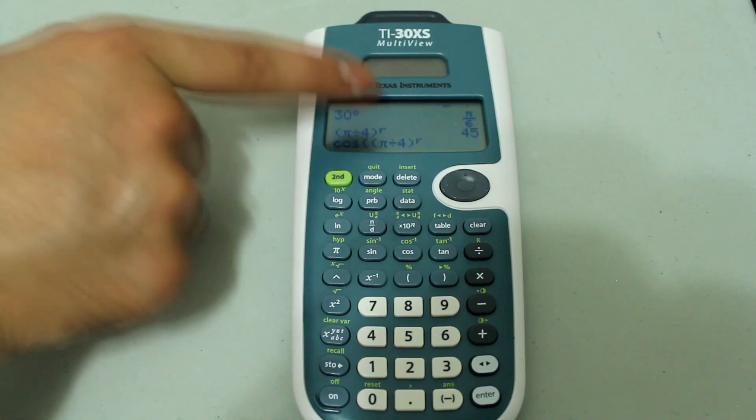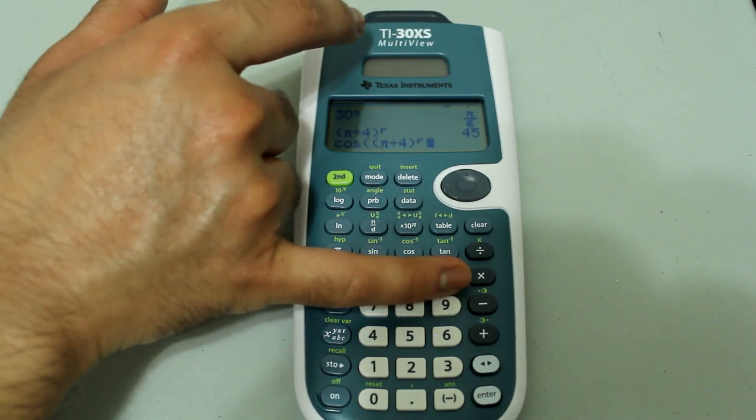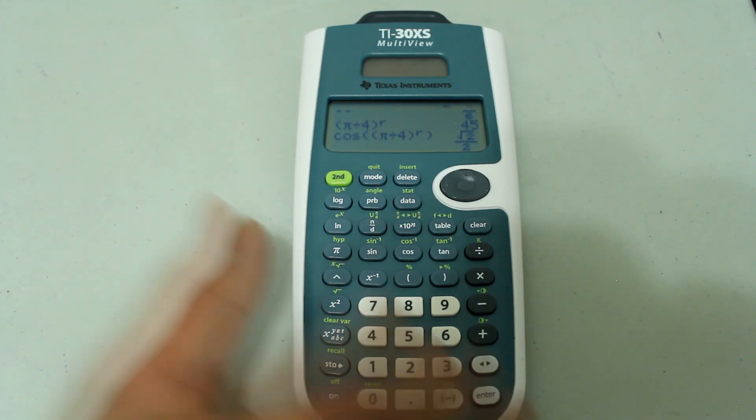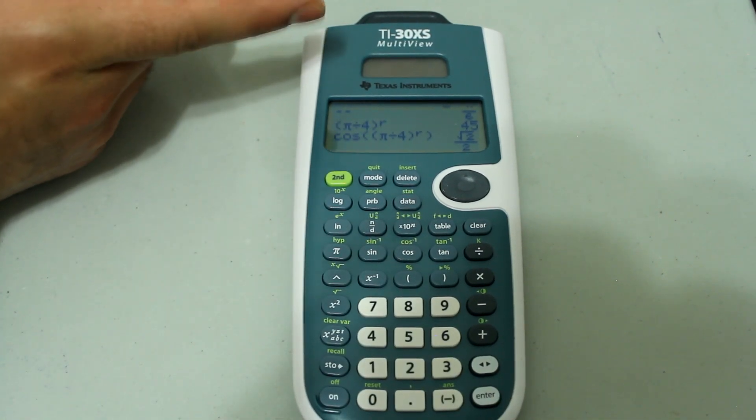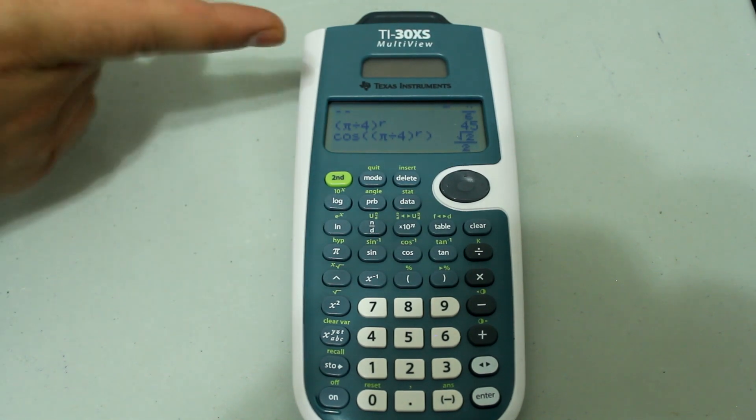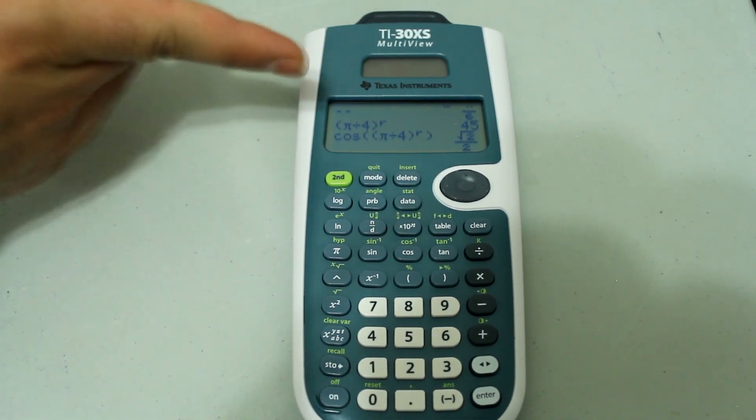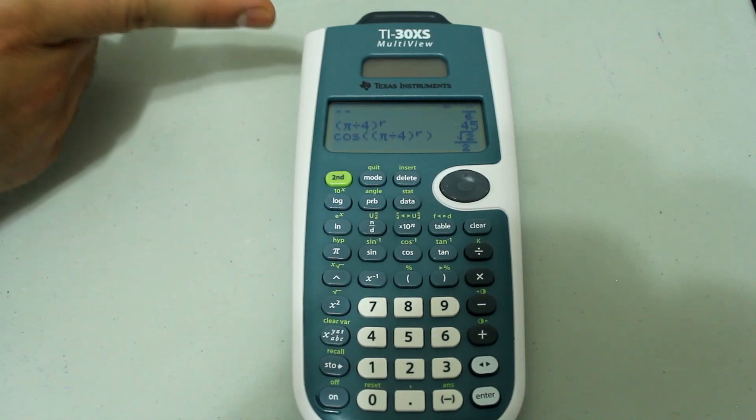And I'm going to tell the calculator that the entry is in radians. So press 4 and this little r appears. Close the parenthesis and press enter. Notice that I was able to do quick calculations in radians while being in degree mode.